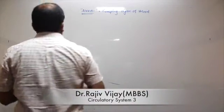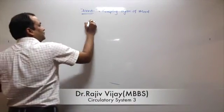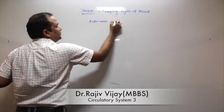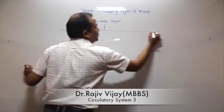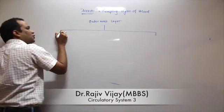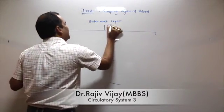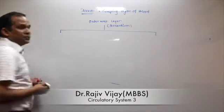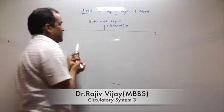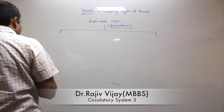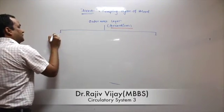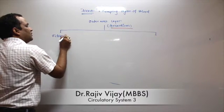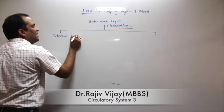If we look at the outermost layer, which is the outermost layer, it is divided into two parts or two layers. What do you call the outermost layer? Pericardium. This pericardium is made up of two layers. The one is tough, which is called fibrous pericardium.